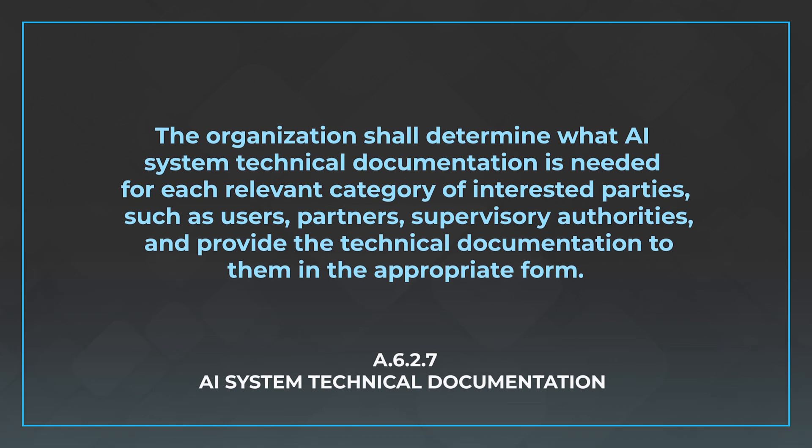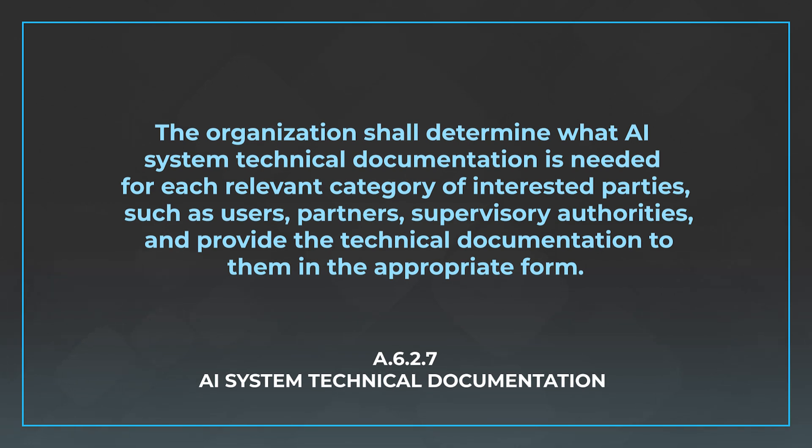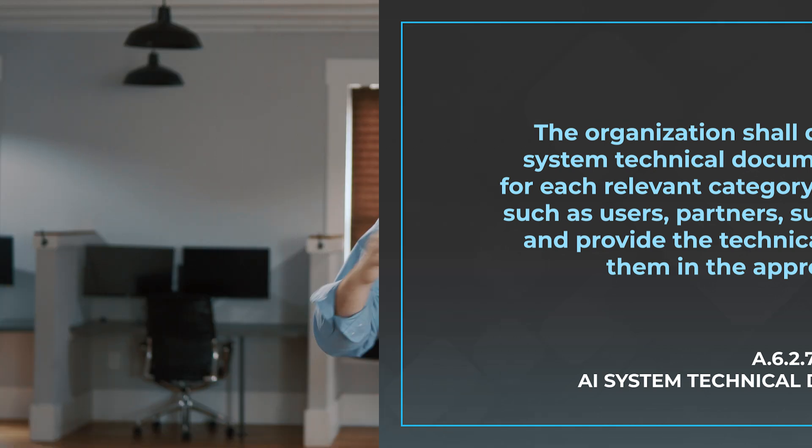The next control is A.6.2.7, AI system technical documentation. This control is all about deciding what the technical specs are, making sure they're in place and appropriate, and that they're followed when developing AI systems. The control says the organization shall determine what AI system technical documentation is needed for each relevant category of interested parties — such as users, partners, and supervisory authorities — and provide that documentation to them in the appropriate form. AI systems are kind of a black box and very different from developing a typical web application, so you need to spend time thinking about what information to provide your stakeholders to be transparent about the technical specs and information related to the system.